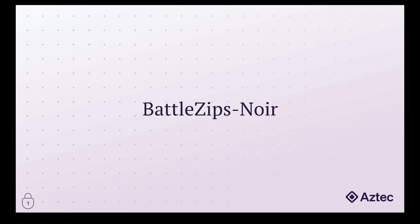We're going to start this series off with a bit of background on what zero-knowledge cryptography is, write our own Noir circuits, and ultimately implement them in a front-end application connected to smart contracts on Ethereum. The takeaway for this video should be that no matter what skill level you're at, it's easy to get started writing zero-knowledge proofs today in Noir.